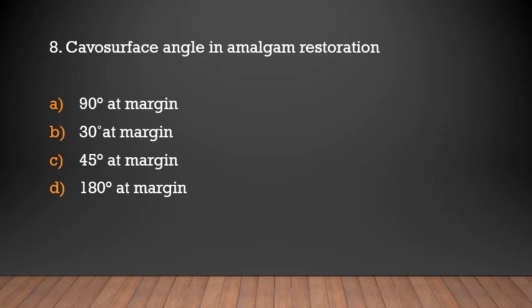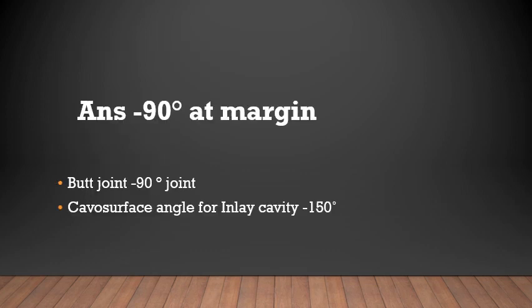Cavosurface angle in amalgam restoration: 90 degree at margin, 30 degree at margin, 45 degree at margin, or 180 degree at margin? The answer is 90 degree at margin. A 90 degree cavosurface angle is known as a butt joint. The cavosurface angle for inlay cavity is 150 degrees.